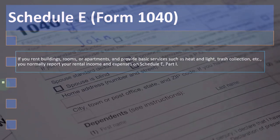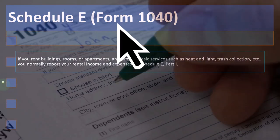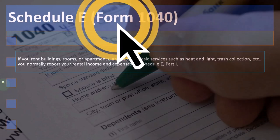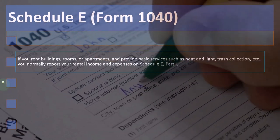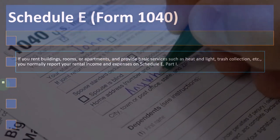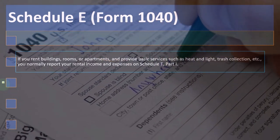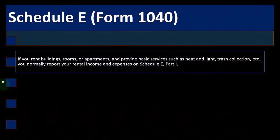Schedule E, Form 1040. If you rent buildings, rooms, or apartments and provide basic services such as heat and light, trash collection, etc., you normally report your rental income and expenses on Schedule E.